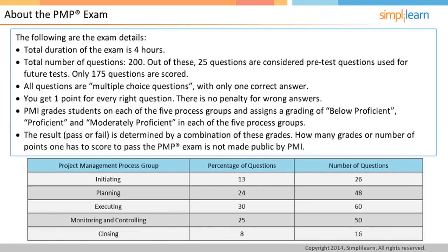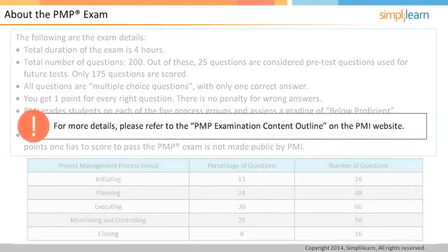The questions in the PMP exam are related to various aspects of project management. These aspects are project initiation, planning, executing, monitoring and controlling, and closing. We call these aspects process groups. For more details, please refer to the PMP examination content outline on the PMI website.